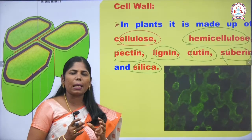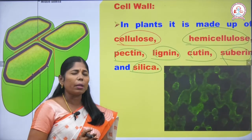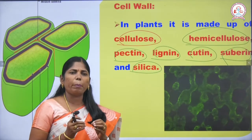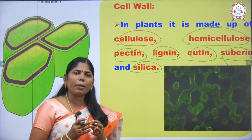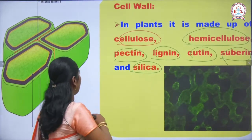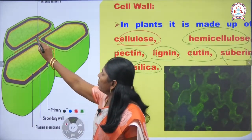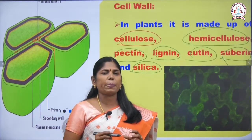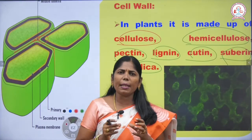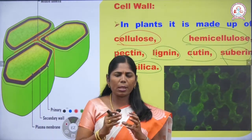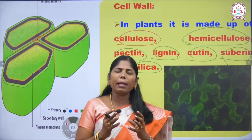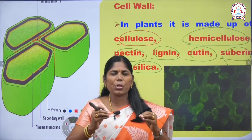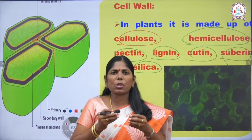Cellulose is the basic cell wall material in plants. Pectin is a very important cell wall material, present in the middle lamella. The middle lamella consists of calcium and magnesium pectate. Pectin is a gelatin-like substance involved in the softening and ripening of fruits.